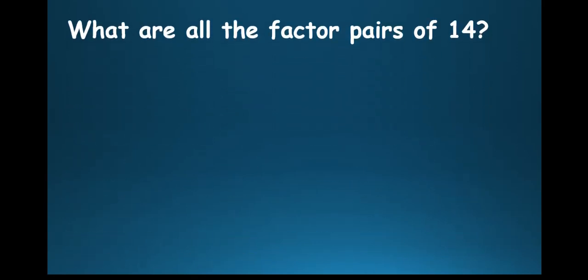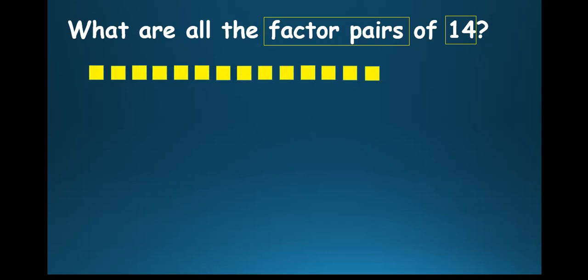The first question says, what are all the factor pairs of 14? So we are interested in finding factor pairs of the number 14. How do we do this? So the very first thing here, I've used a square box to show the number 14. If you count the square yellow boxes, there are 14.